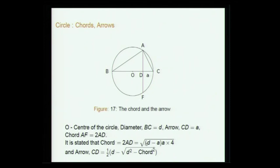In a circle with center O: in triangle ABC, angle BAC = 90° (since BC is the diameter). The arrow (shara) is CD, denoted a, and the chord AF = 2·AD. It is stated that chord = 2·AD = √(4·(d−a)·a), so chord = √(4(d−a)a). If you know a and d you can find the chord. The arrow is half of (d − √(d²−(chord)²)) — a non-trivial result using the similarity of triangles.